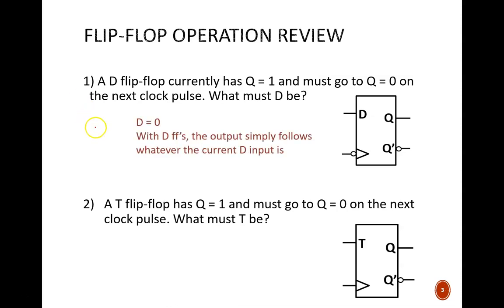The answer is 0. With a D flip-flop, the next output Q value will simply match the current input D value on the negative edge of a clock in this case. Now try the next one. A T flip-flop has Q = 1, and must go to Q = 0 on the next clock pulse. What must T be?